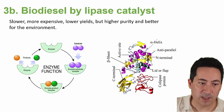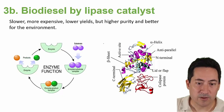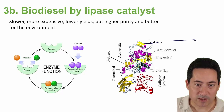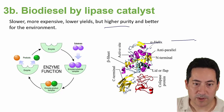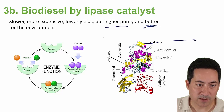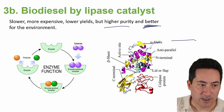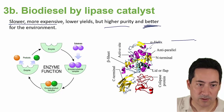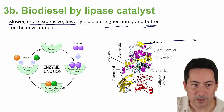The second way to produce biodiesel is using enzymes — specifically lipase. This is much cleaner, giving higher purity and being better for the environment. However, you still need to use methanol, which comes from crude oil, and the downsides are that it's slower, more expensive, and gives a lower yield.